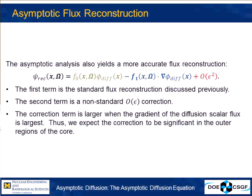The asymptotic analysis also gives us a method for reconstructing the angular flux. Looking at the leading order terms of the asymptotic expansion, we see the completely standard flux reconstruction — the lattice shape function times the full core diffusion solution — but we now have an order epsilon correction term proportional to the gradient of the global solution. In the center of the reactor where the solution isn't changing much, the correction term isn't very significant, but towards the periphery where the solution changes more rapidly, the correction term becomes more significant.